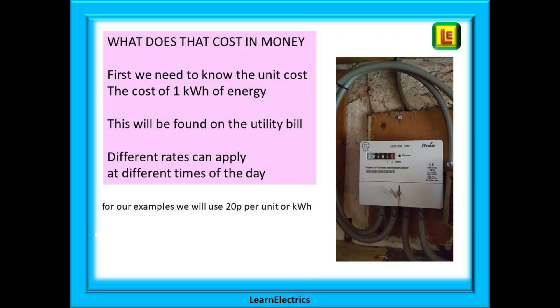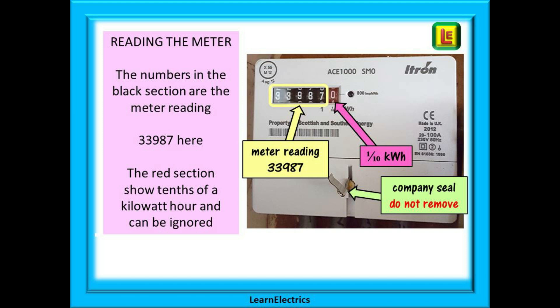But what does that cost in money? First we will need to know the unit cost — the cost of 1 kilowatt hour of energy. This will be found on the utility bill, and different rates can apply at different times of the day. For our examples we will use 20 pence per kilowatt hour. We will need to know our electricity consumption over a period of time, which is what supply companies measure every 3 months.